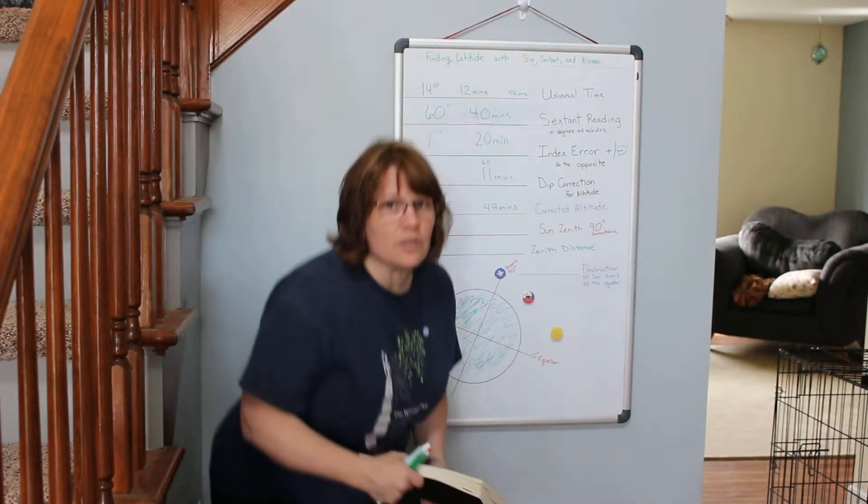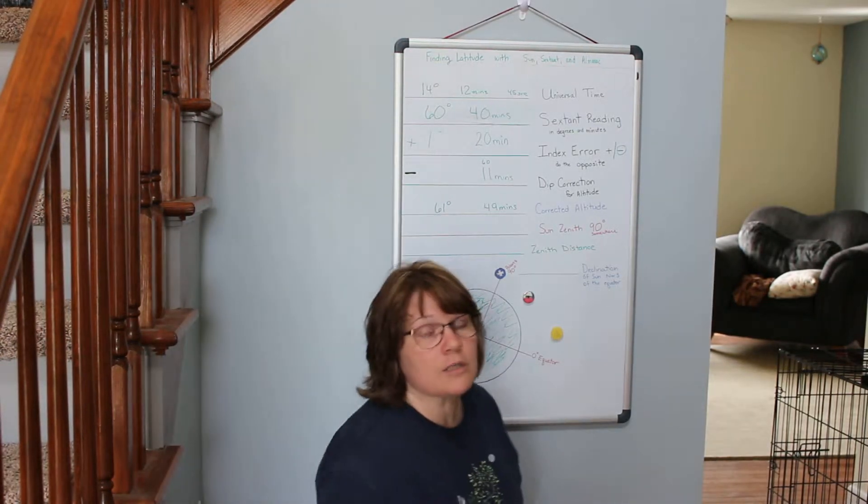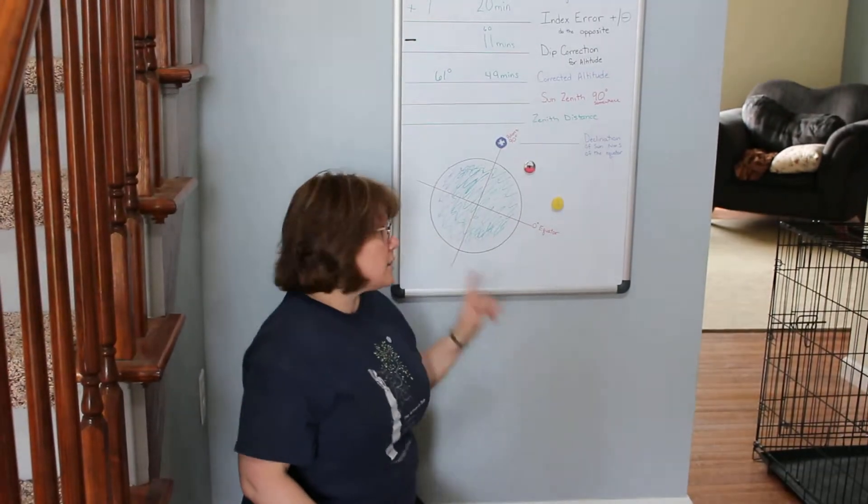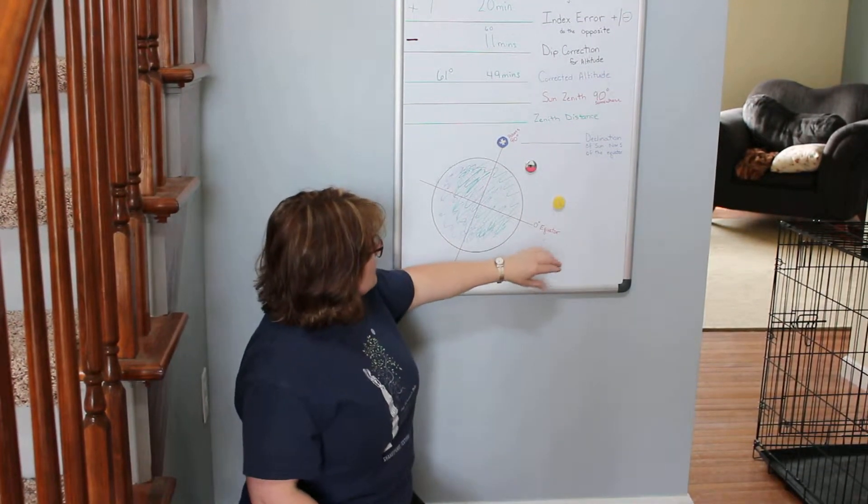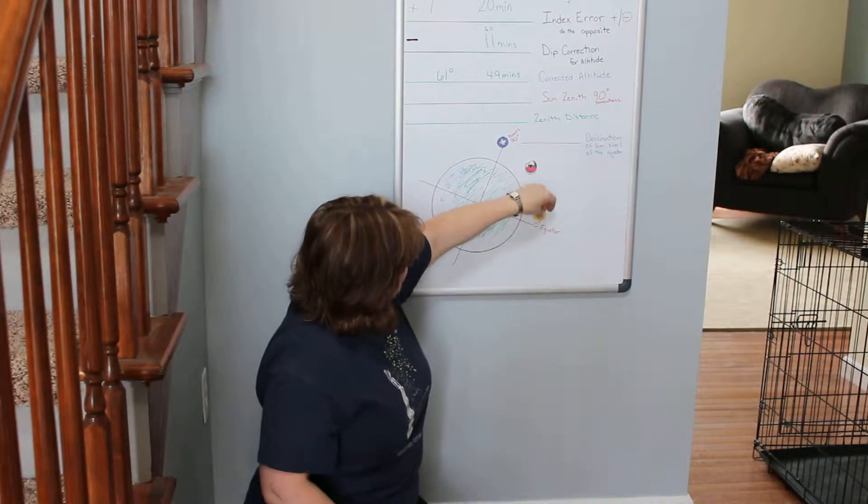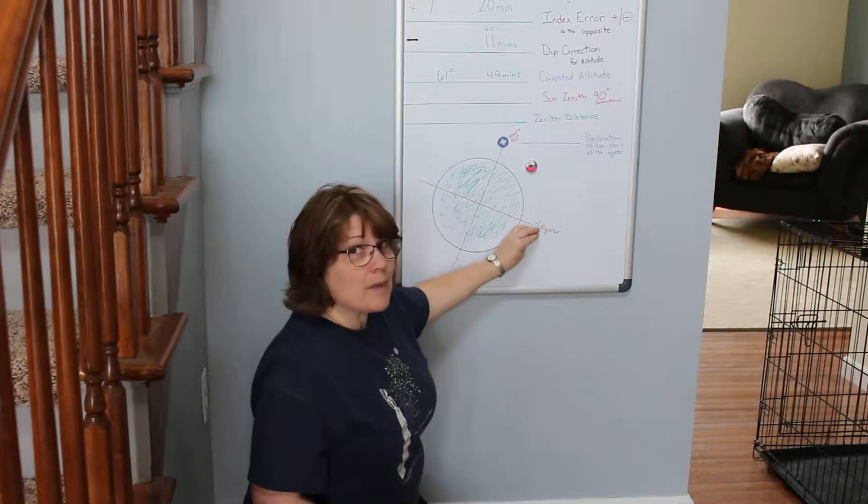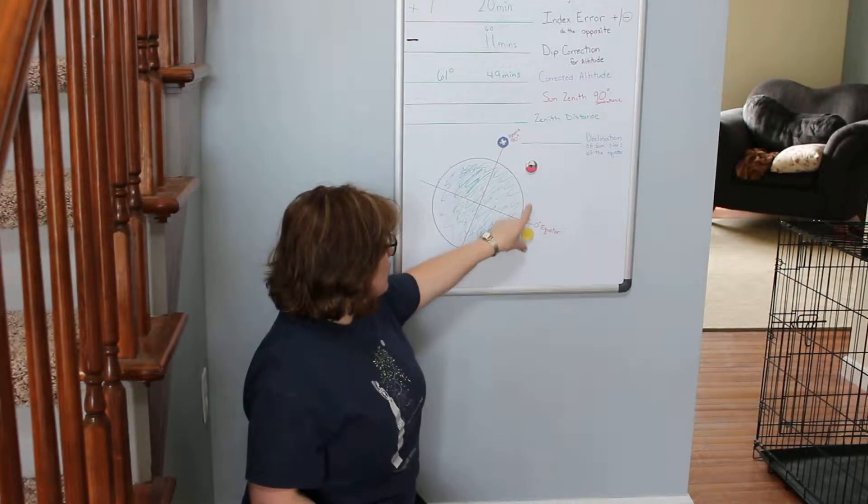When the earth is tilted, that's what's going to give us our summer and our winter through the earth's cycle for the seasons. When that happens, the sun is 23.5 degrees above or below the equator, anywhere in that range of 23.5 degrees.